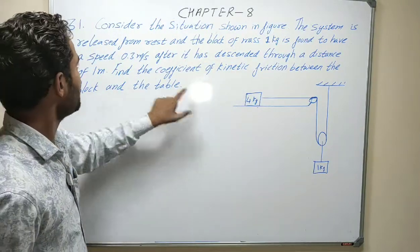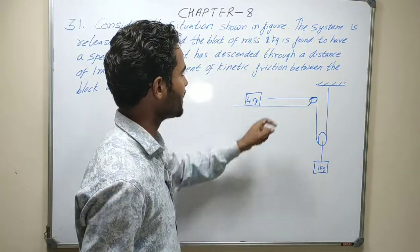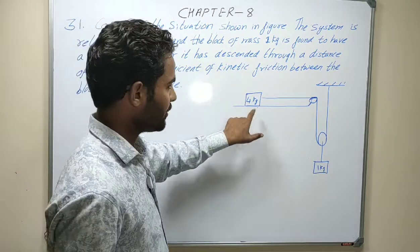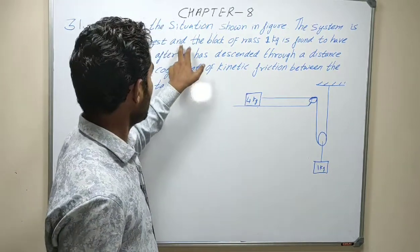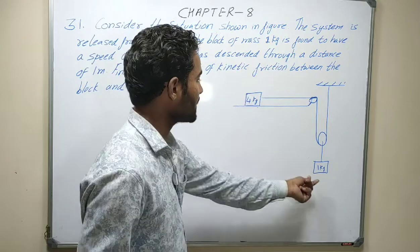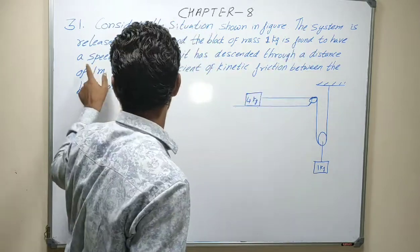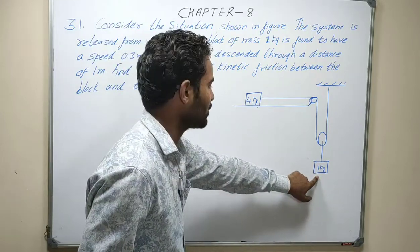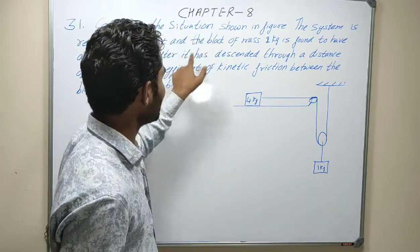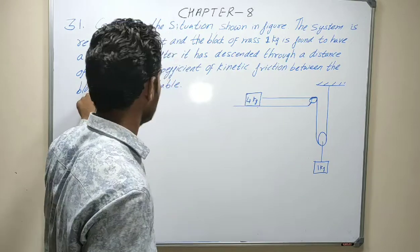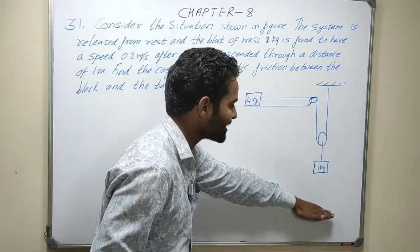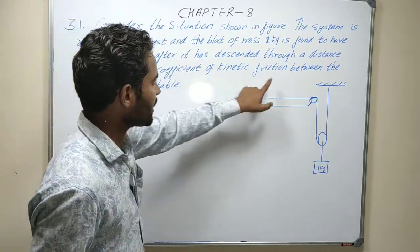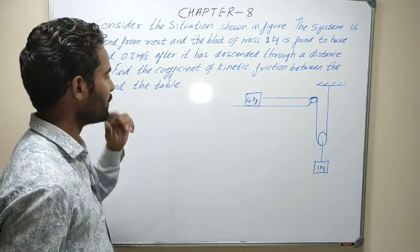What is the question? Consider the situation shown in figure. The system is released from rest initially. The block of mass 1 kg is found to have a speed of 0.3 meters per second after it has descended through a distance of 1 meter. Find the coefficient of kinetic friction between the block and the table.